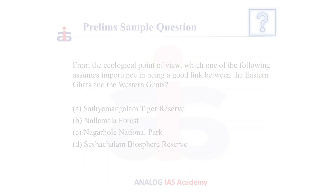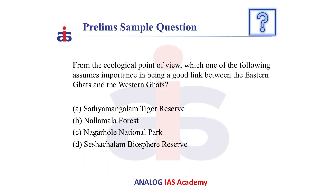Now let us see a previous year question based on this. From the ecological point of view, which one of the following assumes importance in being a good link between Eastern Ghats and Western Ghats? a. Satyamangalam Tiger Reserve, b. Nallamalla Forest, c. Nagarhole National Park, d. Seshachalam Biosphere Reserve. The answer is a. Satyamangalam Tiger Reserve.